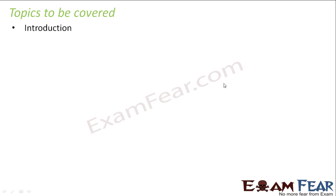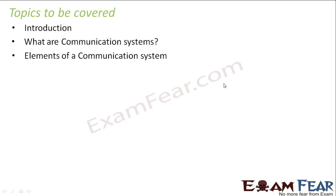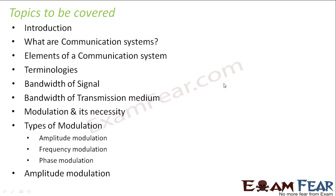Topics to be covered in this lesson are: Introduction, what are communication systems, elements of a communication system, terminologies, bandwidth of a signal, bandwidth of transmission medium, modulation and its necessity, types of modulation — wherein we'll talk about amplitude modulation, frequency modulation, and phase modulation. And then we'll discuss in detail about amplitude modulation.